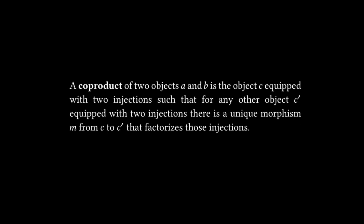And for co-product, it says a co-product of two objects A and B is the object C equipped with two injections such that for any other object C prime equipped with two injections, there is a unique morphism M from C to C prime that factorizes those injections. This is the dual object with respect to product. And instead of having a logical and between the elements, you have a logical or.